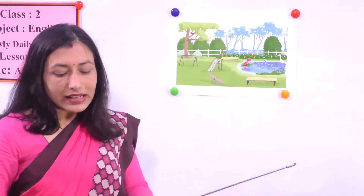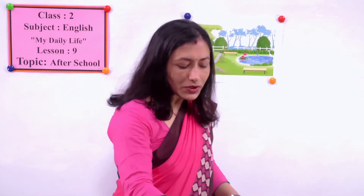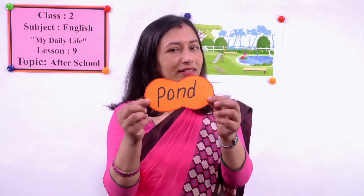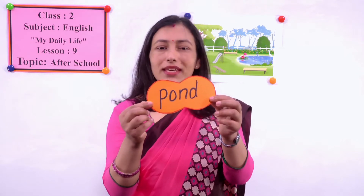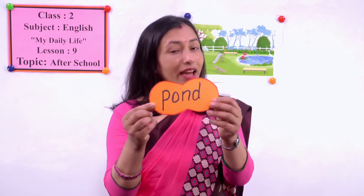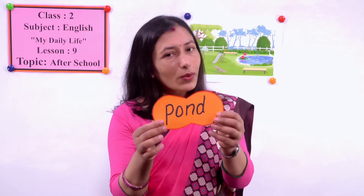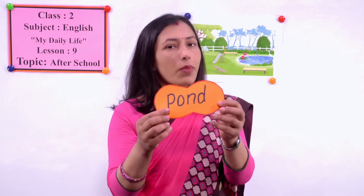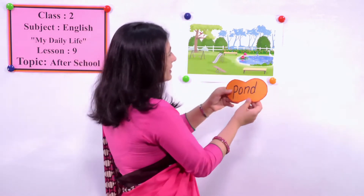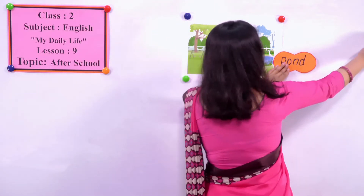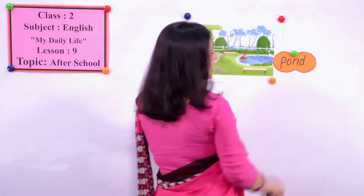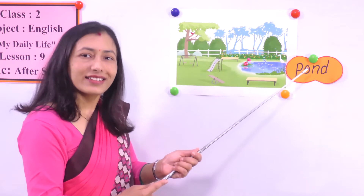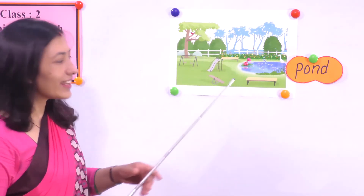Now let me show you some words and you have to read the word. Look at this word. How do you spell? P-O-N-D. And what is the pronunciation? How do you read the word? Good - pond. Repeat after me: pond. Now let's find out pond in the picture. Here is a pond. Look - here is a pond. Read the word: pond. Yes.